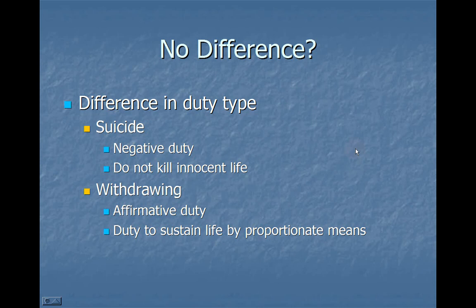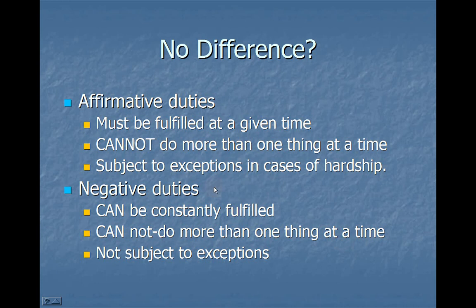The third difference between assisted suicide and withdrawing life-sustaining treatment is a difference in the type of duty involved. In suicide, the act pertains to or violates a negative duty — 'do not kill.' Do not kill is a negative thing: just don't do it. Withdrawing life-sustaining treatment, on the other hand, pertains to an affirmative duty, meaning something that you have to do. There's a duty to sustain life by proportionate means. If you neglect your health just because you're too lazy to go to the doctor, that's negligence because we have a duty to sustain our life. You have to eat, for example.